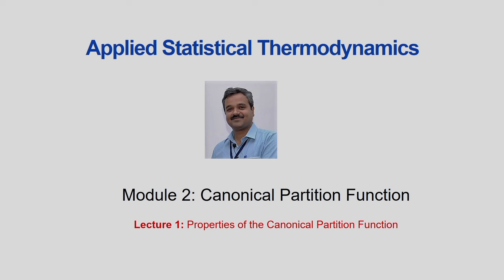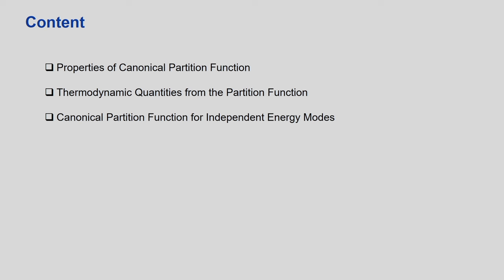In the first module we covered the introduction to statistical thermodynamics, outlined the postulates, obtained the Boltzmann distribution function, and arrived at an expression for the canonical partition function. In today's new module, I will discuss the canonical partition function in detail, then discuss what thermodynamic properties you can obtain from it. Today's lecture is based on the properties of the canonical partition function.